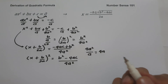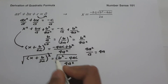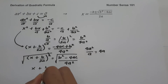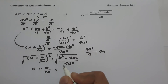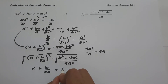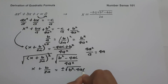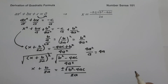To simplify, we take the square root of both sides of the equation. This gives us x + b/2a equals plus or minus the square root of b² − 4ac, all over the square root of 4a², which is 2a.